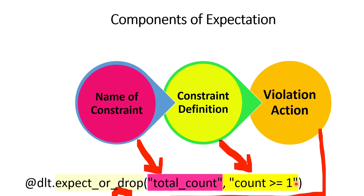The third component is the violation action. In case there are some records that violate this constraint, what should we do? We can drop or warn — there are different actions, which I will cover shortly. Basically, we define the violation action in this part. So these are the three major components, and with the help of these we can define different types of expectations.